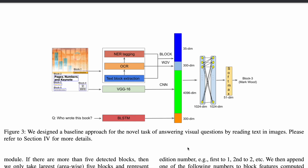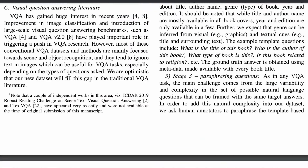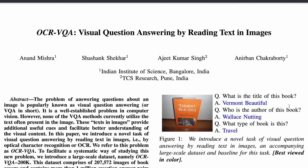The full concatenated vector — 35 + 300 + 4096 + 300 — is fed into a feed-forward neural network with a softmax output over 51 dimensions, covering book edition, genres, yes/no, block indexes, year, and more. For any given question, one of these 51 outputs is activated. If this paper got you interested in VQA, a series on document-based question answering is coming — subscribe and look out for it!